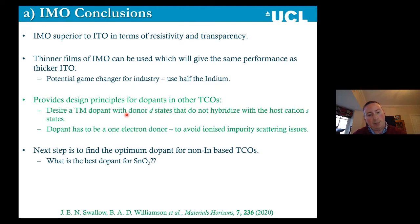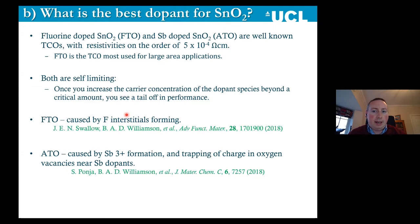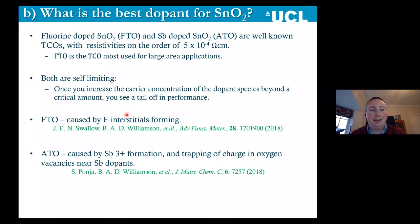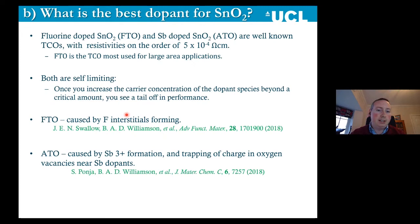Can we take that understanding and find an optimal dopant for a non-indium-based TCO? What's the best dopant for tin dioxide? FTO, ATO, and antimony-doped tin dioxide are well-known TCOs with resistivities that can come down to around five times ten to the minus four. FTO is actually the TCO most used for large area applications — Pilkington NSG coat basically 14 football pitches of glass a day with fluorine when running that line in their factory in Latham. They came to us and said: we've been using FTO for basically 50 years — is there anything better? We started looking at tin dioxide closely and found that when you increase the carrier concentration of fluorine or antimony in these systems, performance increases up to a certain point, and once you're beyond this critical concentration, you start to see a tail-off.